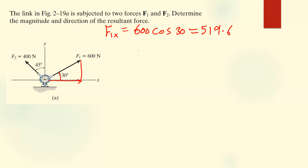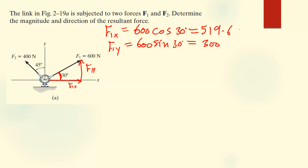Now we look at the Y component of F1. F1 in the Y will still use 600, but because it's opposite to this angle of 30 degrees, we use sine. So F1y = 600 sin 30. Sin 30 is 0.5, so 0.5 times 600 gives us 300 Newtons. So those are the two components for F1.